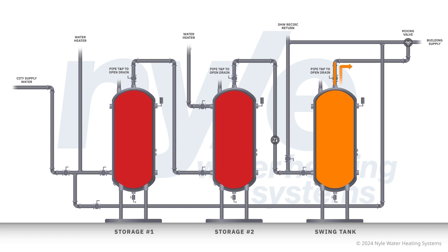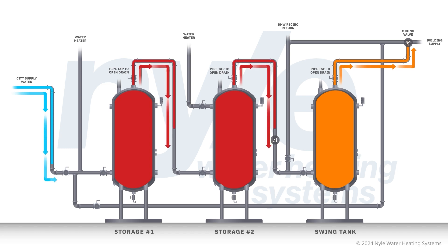When hot water is used in the building, say through a faucet, this triggers a demand event. The water from our swing tank, which is at a usable temperature, is first sent through the mixing valve and then directed into the building.